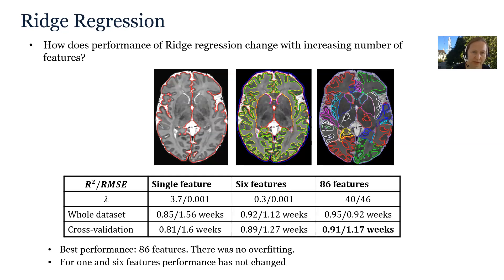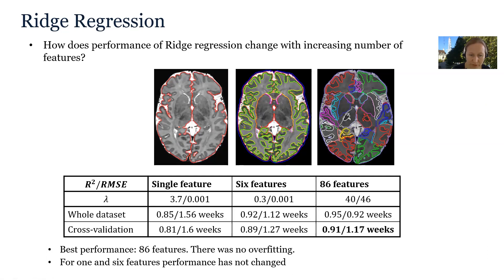Let's see how ridge regression performs on our three different datasets: one with a single feature (whole brain volume), six features corresponding to volumes of six brain tissues, and 86 features corresponding to volumes of 86 brain structures. Looking at the results, for one and six features the performance has not changed, so the ridge penalty didn't bring anything new compared to multivariate linear regression.